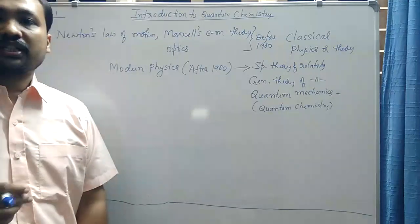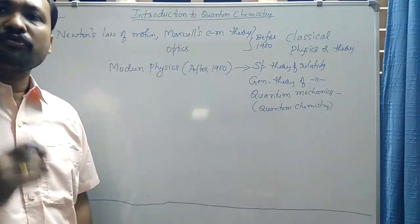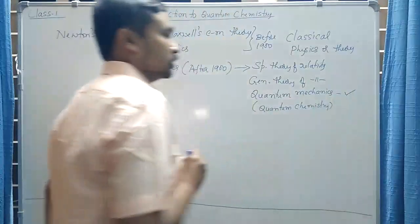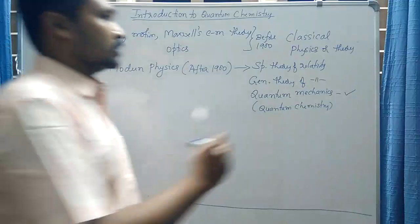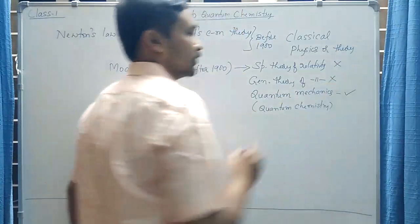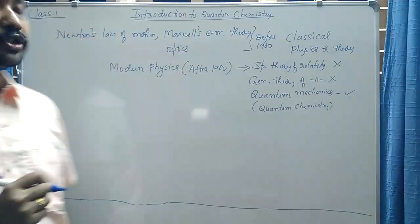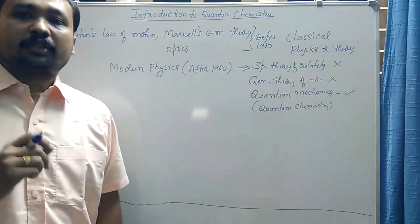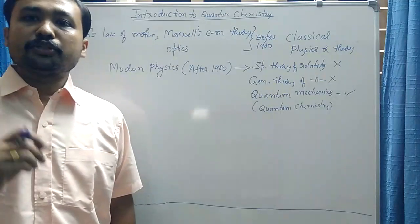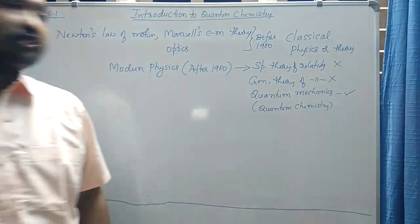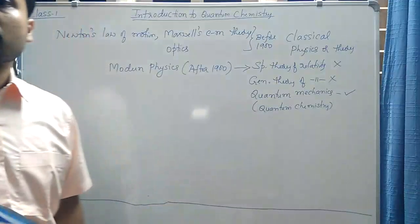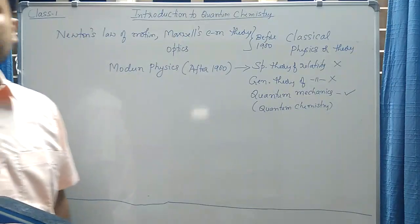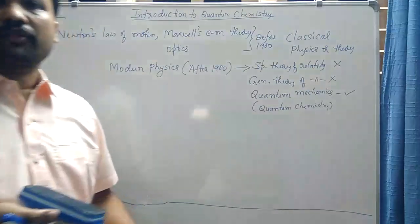The very first question that comes to mind is: why do we require a new theory called quantum chemistry? We will concentrate only on quantum chemistry, since special and general relativity are more related to physics. So why do we require quantum chemistry — why a new law in science when we already have older theories which worked well?